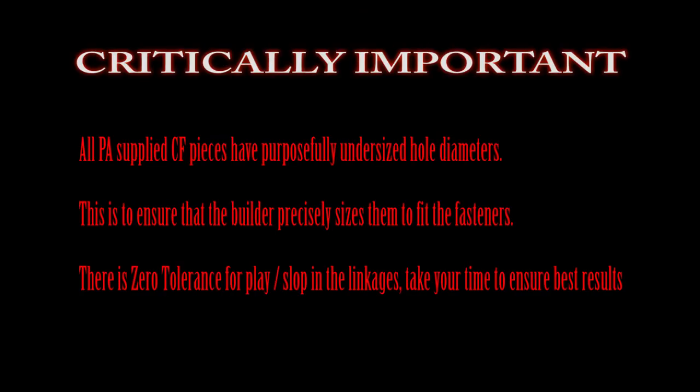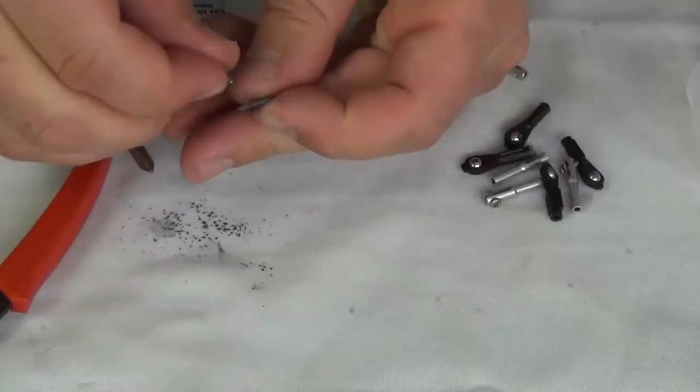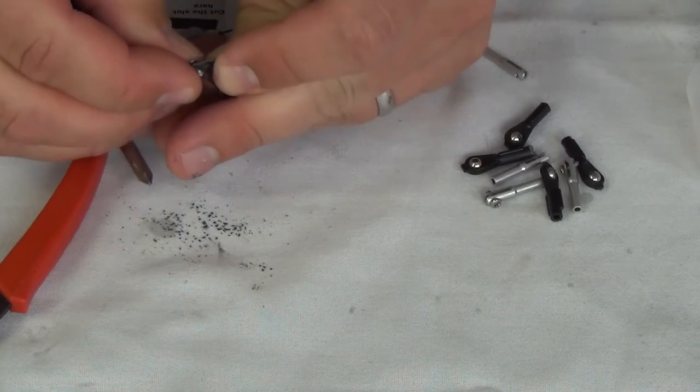It's important to note that all of the carbon fiber pieces supplied with holes are purposefully undersized from PA. Because everything must fit together with zero player slop, you will need to accurately enlarge the holes yourselves. Take your time, make small adjustments. These bolts should perfectly pass through the carbon fiber arms or holes without any slop.